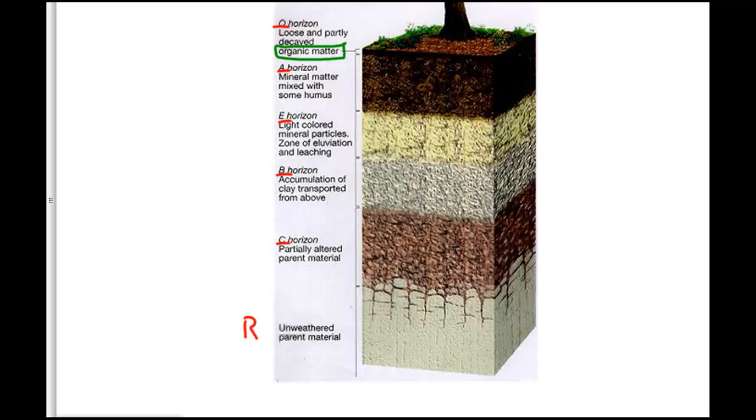but it could also be anything else that was once living. Humus, another term we're going to see. Hummus is something you put on pita bread; humus is partially decomposed organic matter, and that's going to be an important component of our soil.